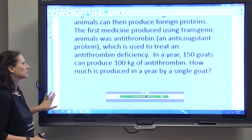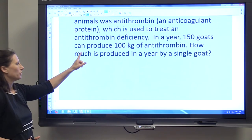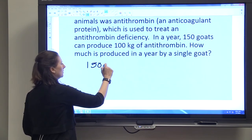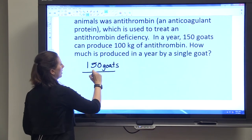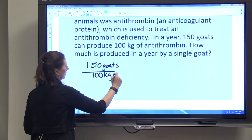So we know 150 goats can produce 100 kilograms of antithrombin.